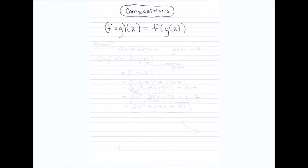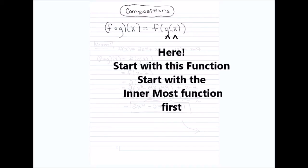Composition — the way you read this — you have F composition with G of X. When you see F composition G, you can rewrite it as F of G of X. What we need to keep in mind is that we're always going to look at the function that's innermost first — the G of X — and then go back and work with the F of X since it's further out.